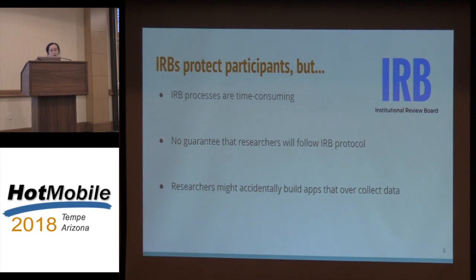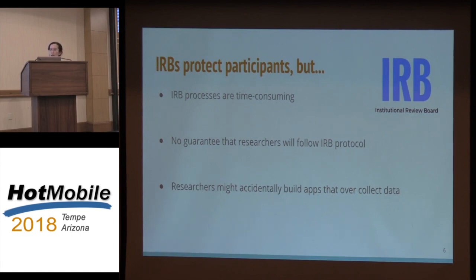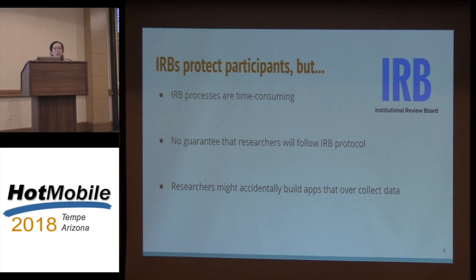In order to mitigate these kinds of risks, a lot of universities and research institutions use a board called IRB — Institutional Review Board. This board is a team of people who review research proposals involving human subjects. They will tell researchers a list of things they can do and a list of things they cannot. This sounds good, but there is a big caveat. Whenever we apply for IRB approval, the process is very time-consuming — usually it takes at least a month. That is the first disadvantage.